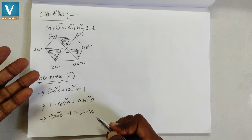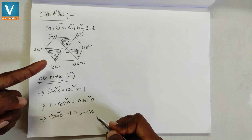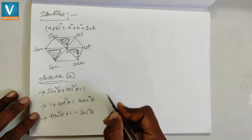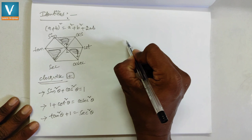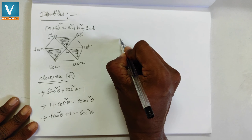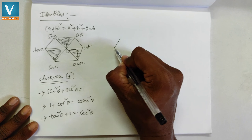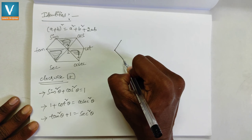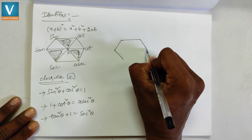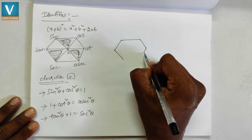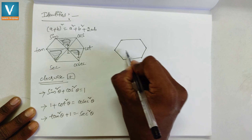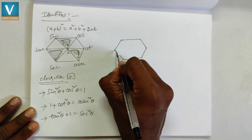Now we'll see what happens when we change to the anti-clockwise direction. Drawing the hexagon again and joining the vertices.